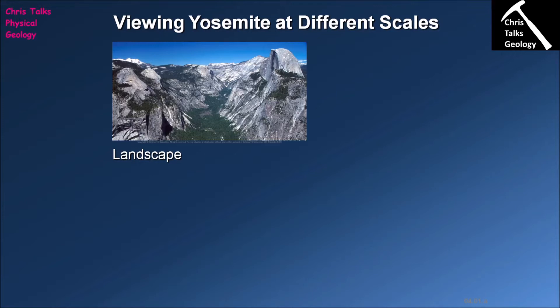The first question is: what materials will a geologist regularly encounter? The answer is there are two of them: rocks and minerals. A rock is made up of minerals; a mineral is not made up of rocks. A rock essentially consists of one or more minerals all mixed together. Minerals are the building blocks of rocks — that's a very important distinction.